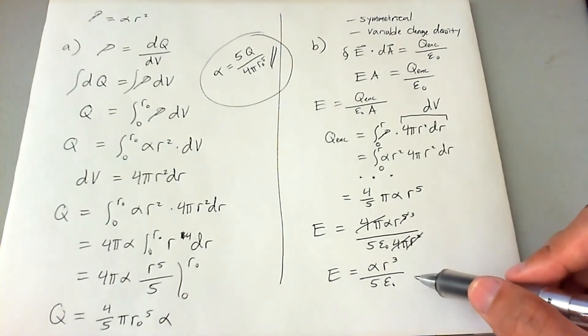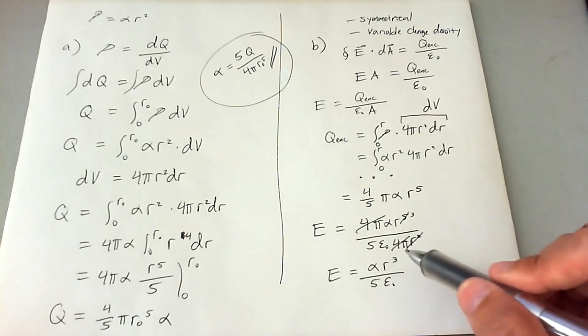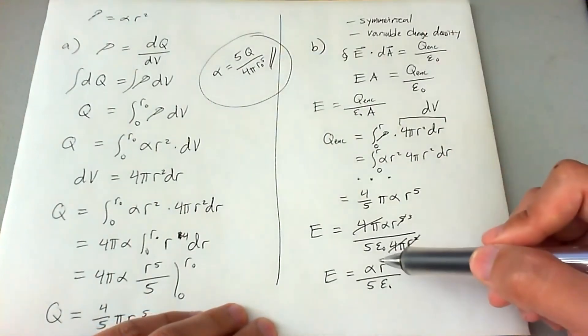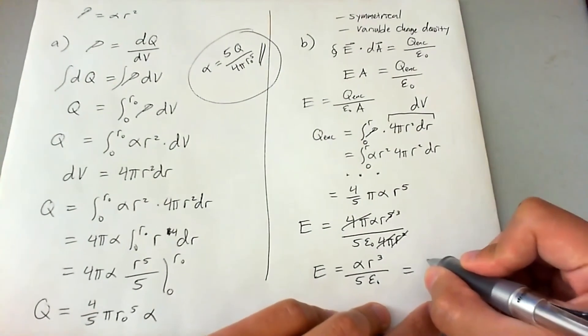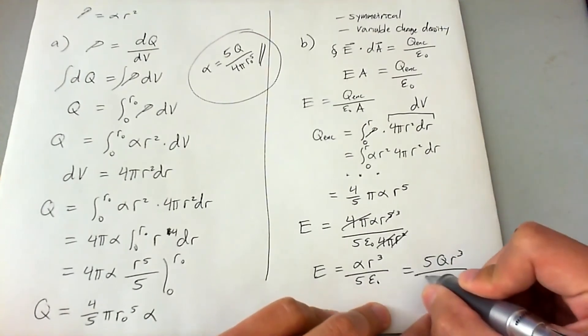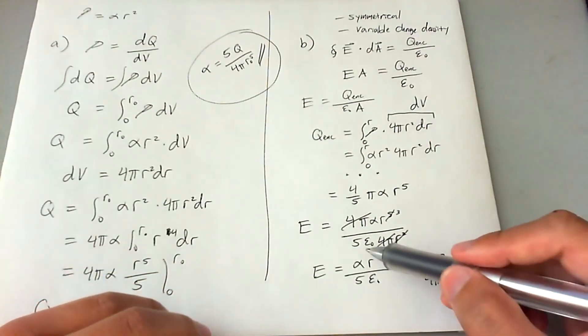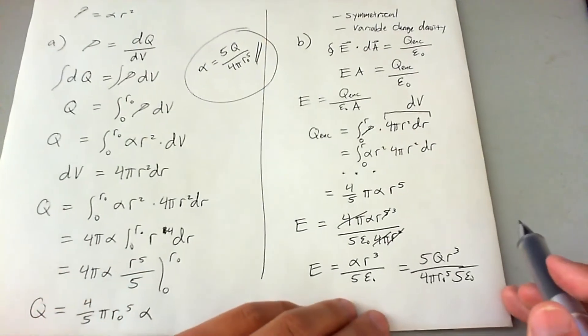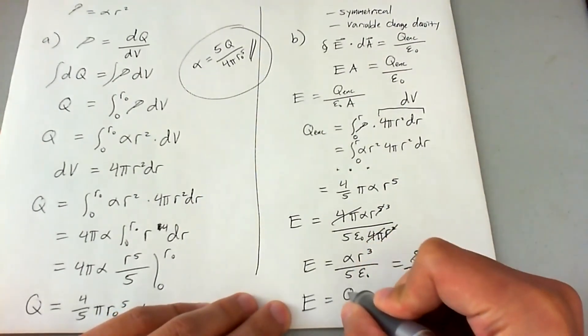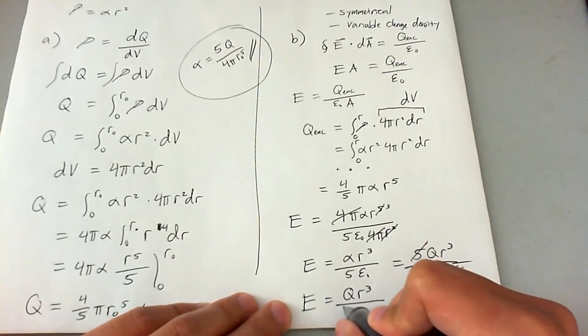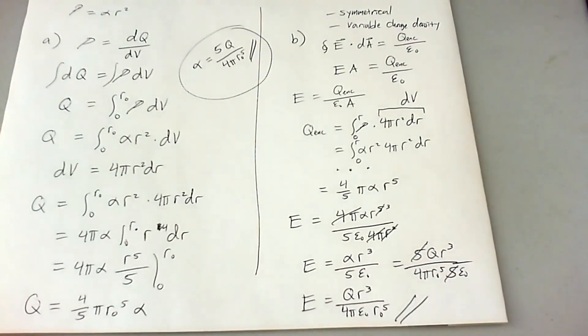Now, this is pretty cool. I can be happy with this, except if we really want to get this in terms of something that's more familiar to the problem itself, we can eliminate alpha by plugging in this, and we'll get everything in terms of just q, r naught, and r. So let's go ahead and do that with the limited space I have left. It would be 5 q r cubed over 4 pi r naught fifth times 5 epsilon naught. So that's just plugging in the alpha up here and then bringing the rest over. The 5 will cancel out, and I believe that's it. So E ends up being q r to the third divided by 4 pi epsilon naught times r naught to the fifth power. And that is the solution to part b.